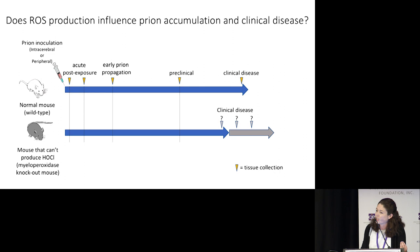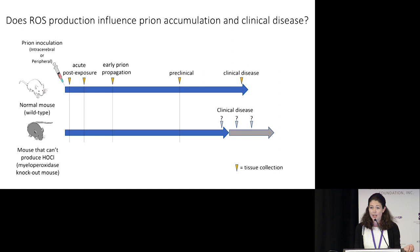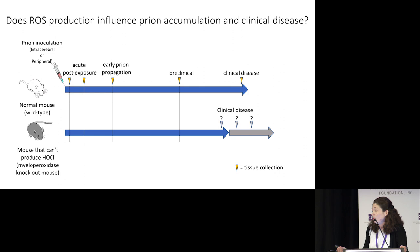To do this, I'm using genetically altered animals that are unable to produce any of these hypochlorous acid ROS disinfectants. I've injected these animals with prions and I'm following them over time to see how quickly the prions accumulate — or possibly how quickly the prions are cleared.